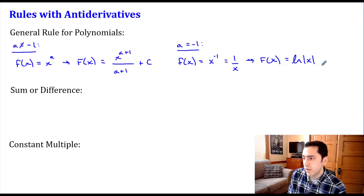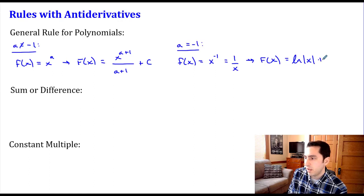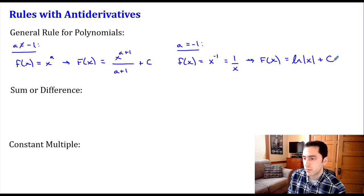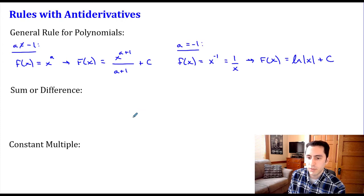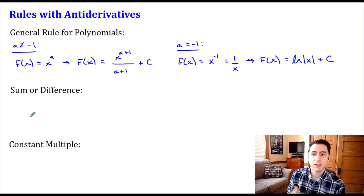We include absolute value to make sure everything works out correctly, and as always we include our arbitrary constant C. So the derivative of the natural log of |x| gives us one over x, which we can rewrite as x to the negative first power.